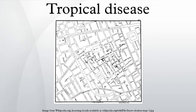Schistosomiasis, also known as schisto or snail fever, is a parasitic disease caused by several species of flatworm in areas with freshwater snails, which may carry the parasite. The most common form of transmission is by wading or swimming in lakes, ponds, and other bodies of water containing the snails and the parasite. More than 200 million people worldwide are infected by schistosomiasis.